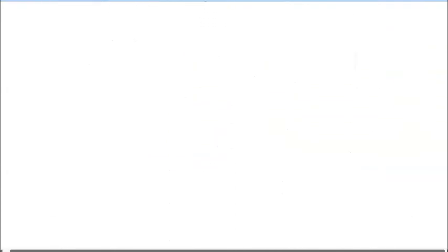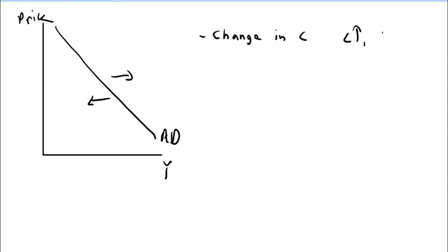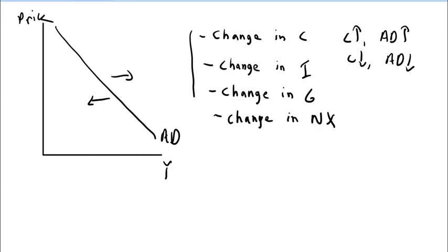Therefore, after showing all these components, we can confirm that price and Y have a downward-sloping aggregate demand curve. What factors shift the aggregate demand curve to the right or left? It's basically changes in each component: consumption, investment, government spending, and net exports. If consumption increases, aggregate demand goes up; if consumption decreases, aggregate demand goes down. Each component of aggregate demand can shift it to the left or right.